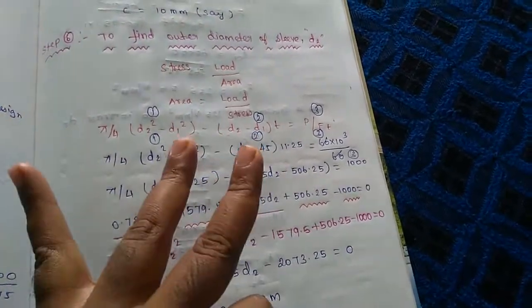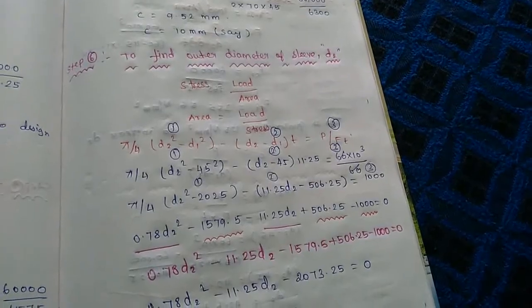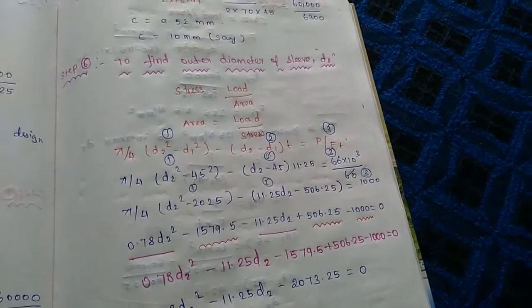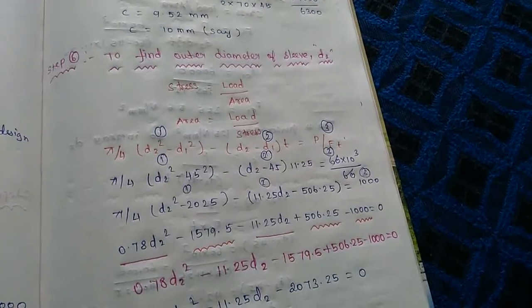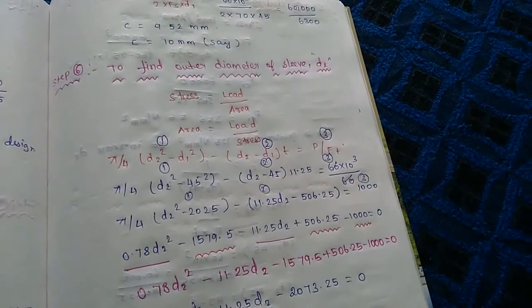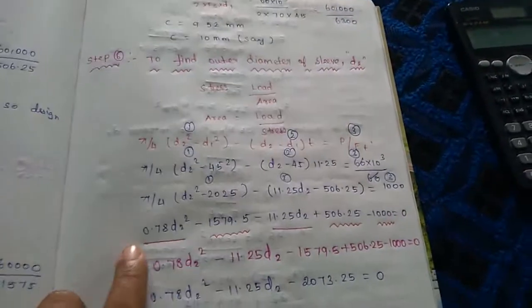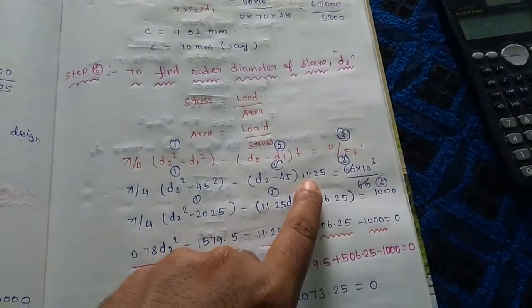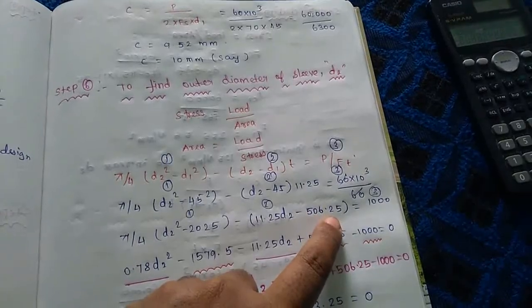First, find d1 to get c, then check d2. Stress = load / area. The area expression is: π/4 · (d2² - d1²). Setting up the equation: c = P / Ft = 60 × 10³ / 60. Expanding: π/4 · d2² - π/4 · d1², substituting d1 = 0.75·d2, gives 0.78·d2² minus terms. Multiplying through with the proportions: (0.78·d2² - 0.25·d2²) terms, with 60 × 10³.